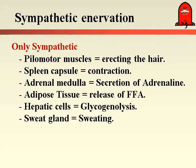The organs that contain only sympathetic nerve fibers include the pilomotor, the spleen capsule, the adrenal medulla, adipose tissue, hepatic cells, and sweat glands. Sympathetic stimulation produces erection of hair by pilomotor muscle, contraction of the spleen to increase blood in the cardiovascular system, secretion of adrenaline from the adrenal medulla, increased energy and heat from adipose tissue, increased glucose by glycogenesis and gluconeogenesis in hepatic cells, and increased sweating from sweat glands.